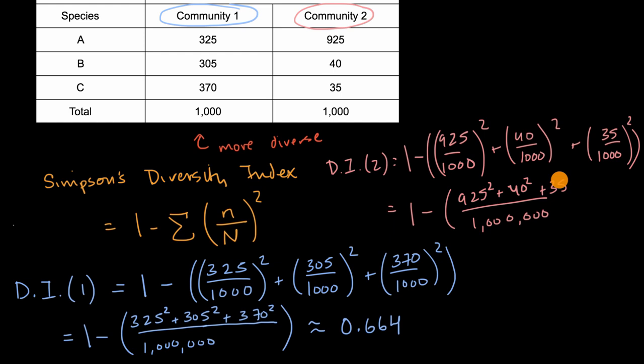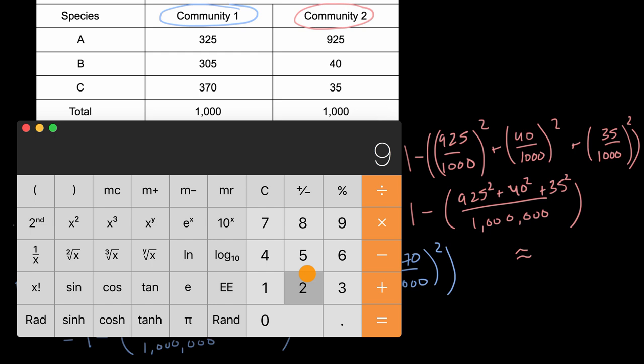And then this is going to be approximately equal to, 925 squared, plus 40 squared, plus 35 squared, is equal to this. divided by 1,000,000. So divided by 1, 1, 2, 3, 1, 2, 3,